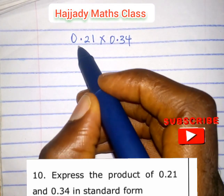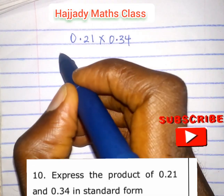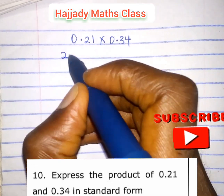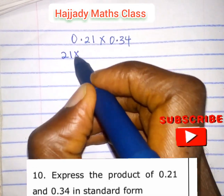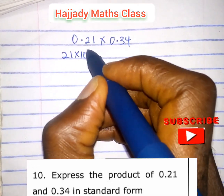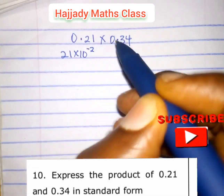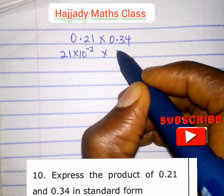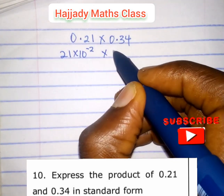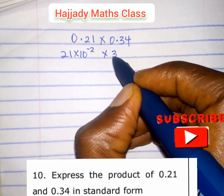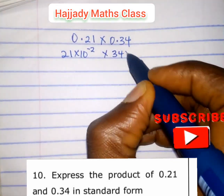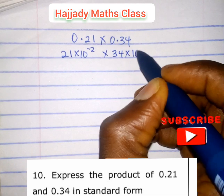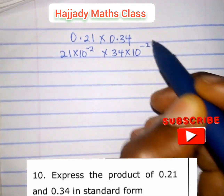Doing this, we convert to standard form: 0.21 is the same as 21 times 10 raised to the power minus 2, and 0.34 in standard form is the same as 34 times 10 raised to the power minus 2.